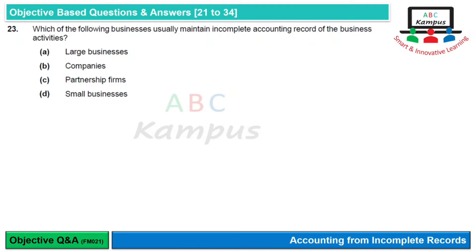Partnership firms बड़े भी होते हैं और छोटे businesses भी। Small businesses के पास proper resources नहीं होते, sometimes proper accounting record नहीं होता, और उनके पास इतना staff भी नहीं होता कि वो proper accounting record maintain कर सकें। तो small businesses incomplete records रखते हैं।